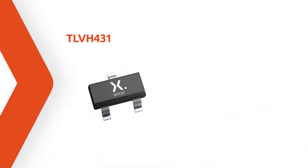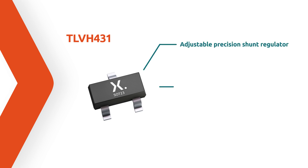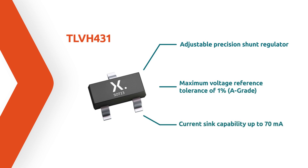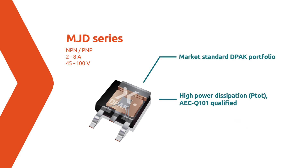The base current is controlled by an A-grade TLVH431 precision shunt regulator, offering a maximum current sink capability of 70 milliamps. To increase the precision of the linear regulator further, the MJD31CA could even be replaced by the high-gain version MJD31CH-Q.